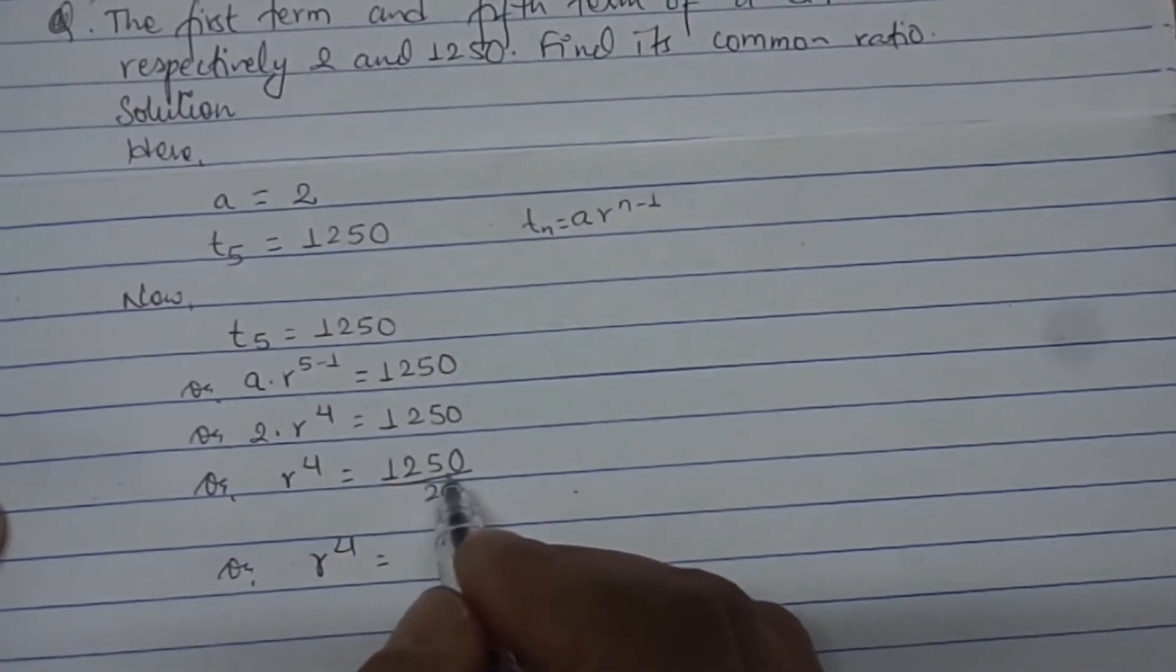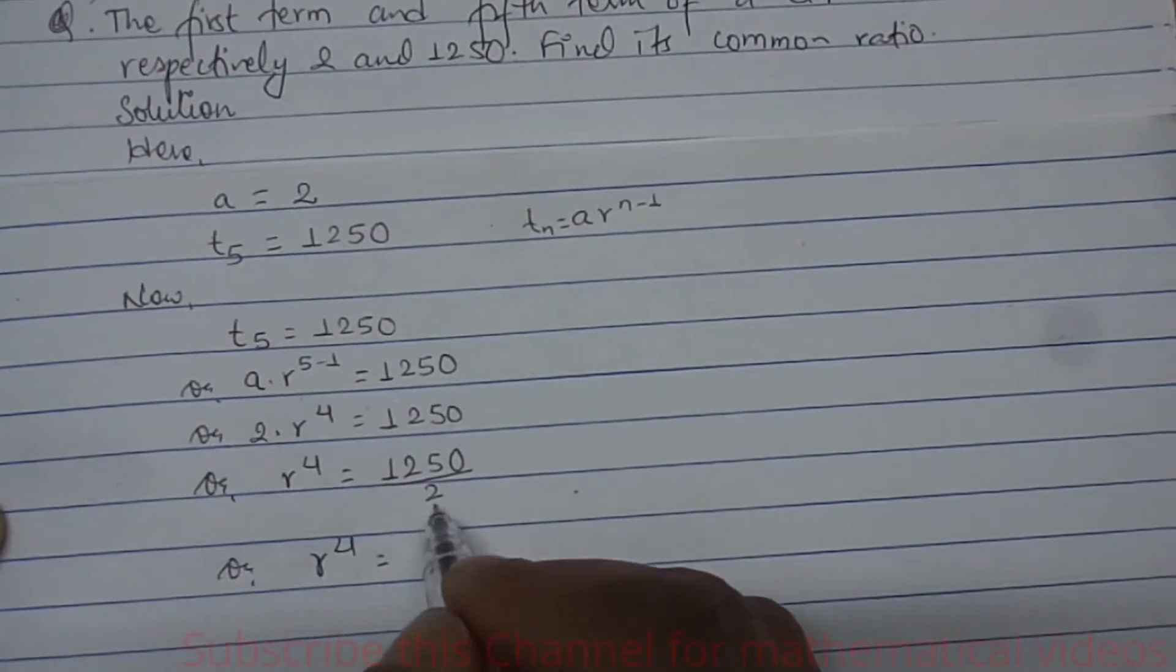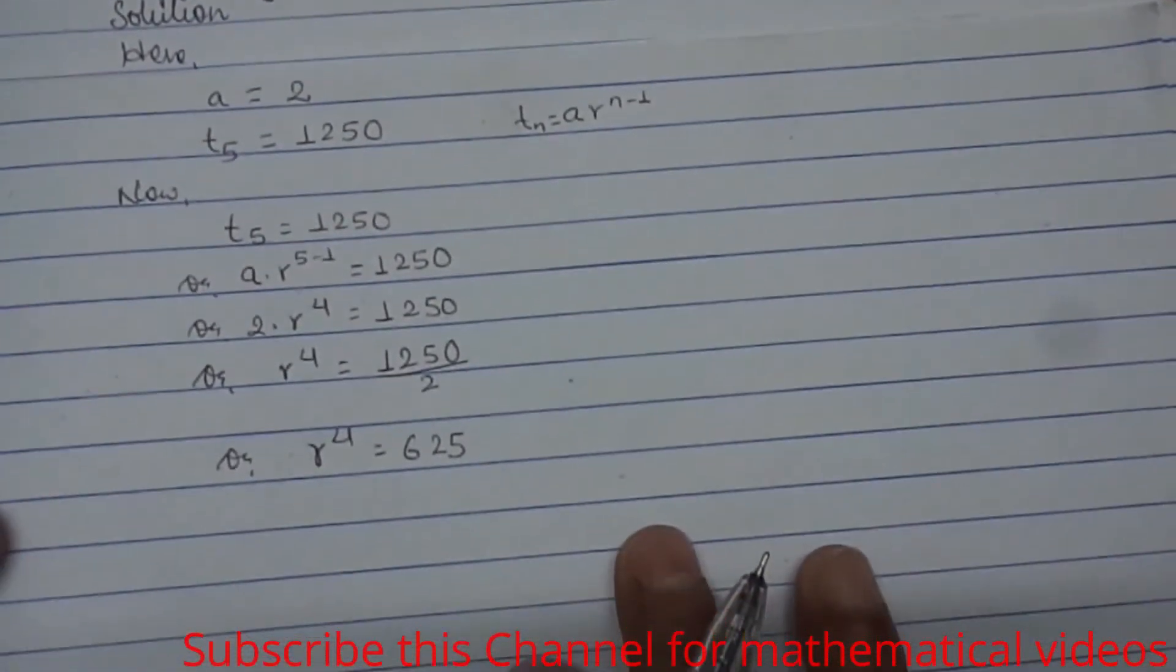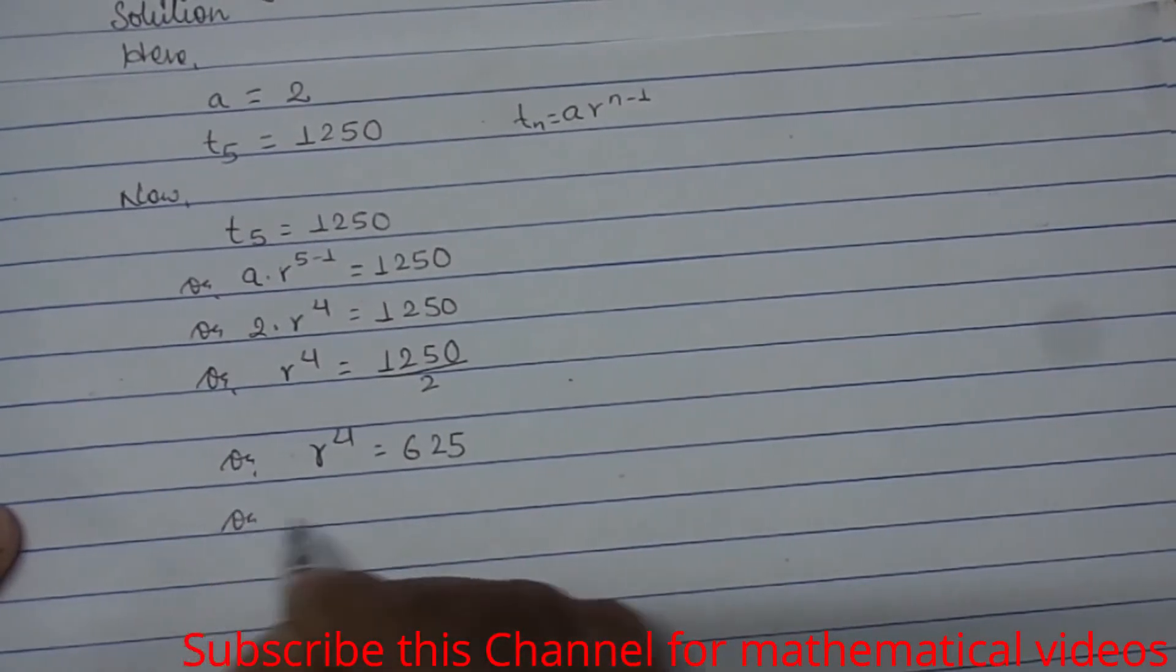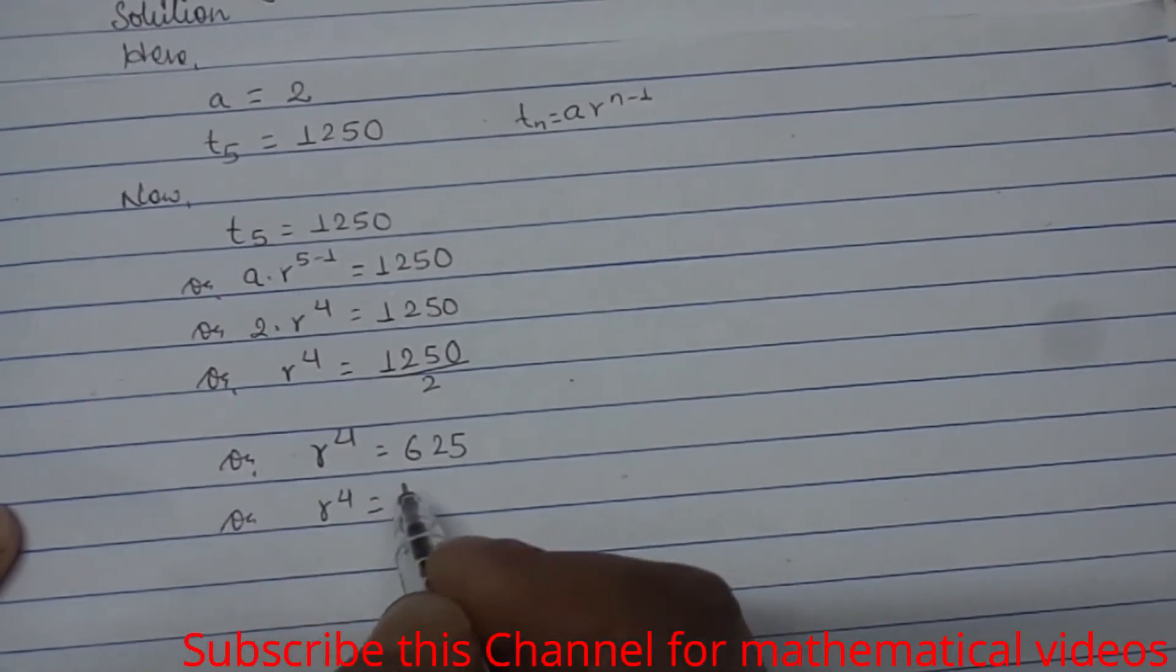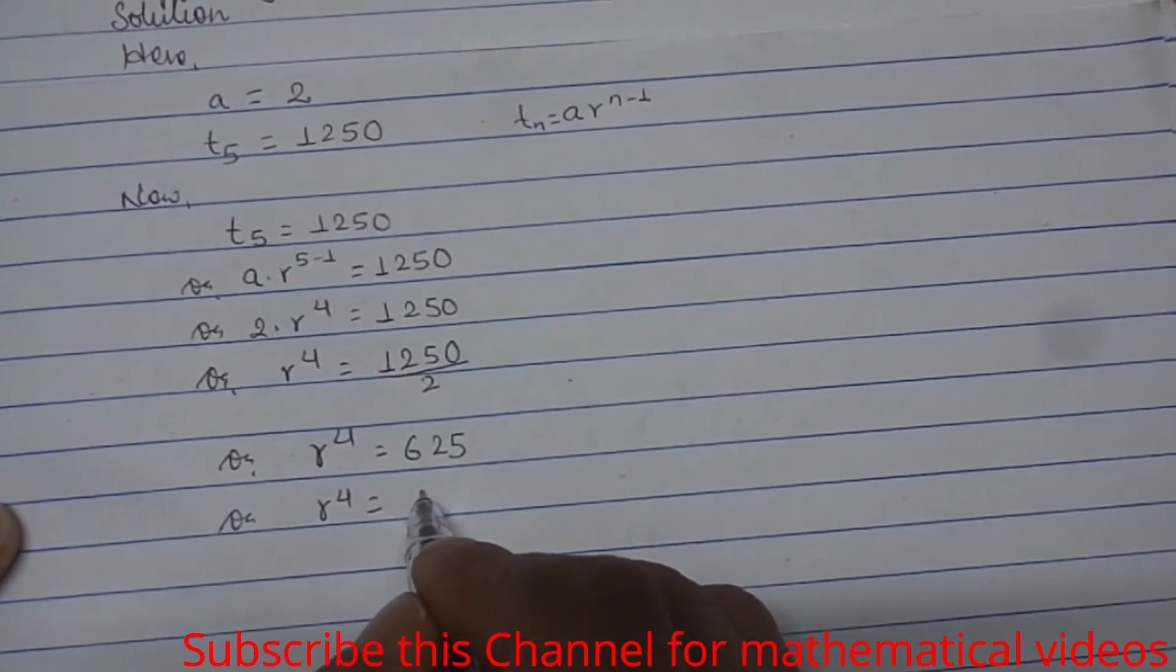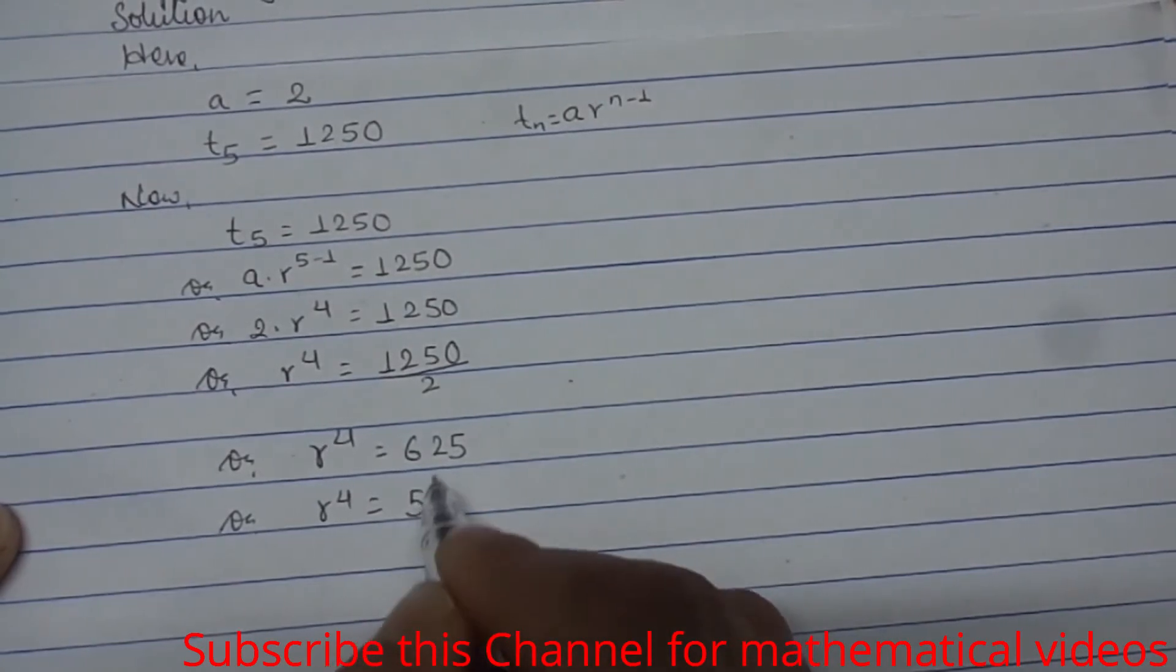Now, r to the power 4 equals 625. This means 625 equals 5 to the power 4.